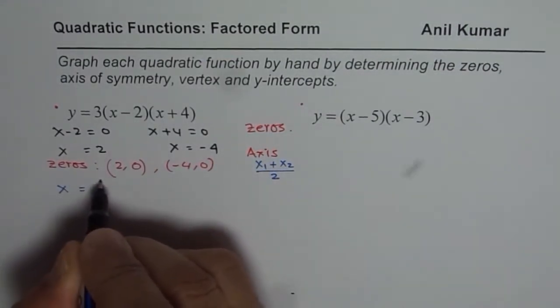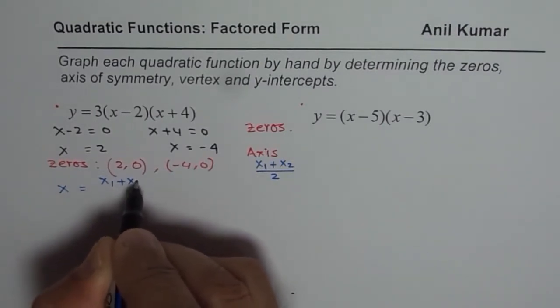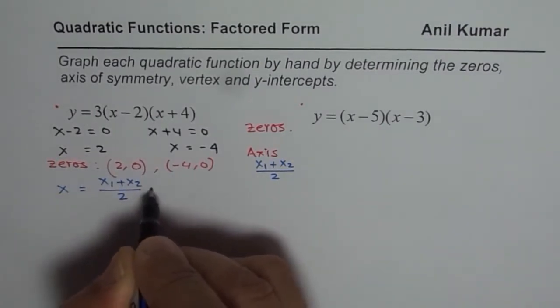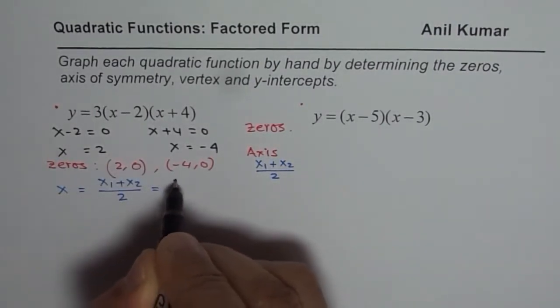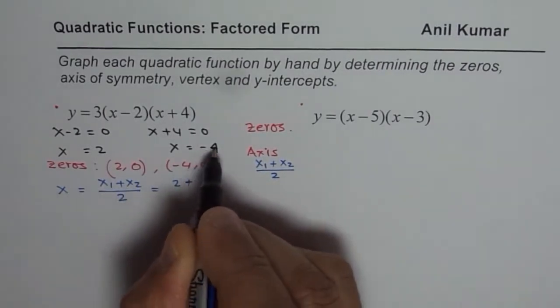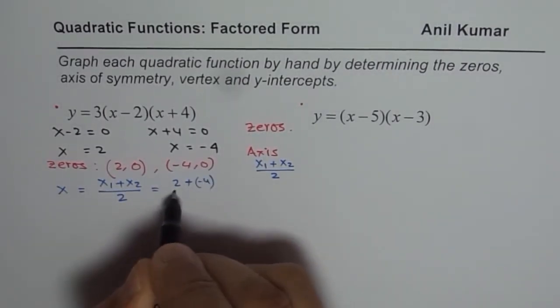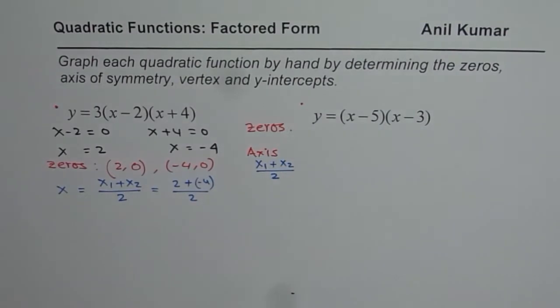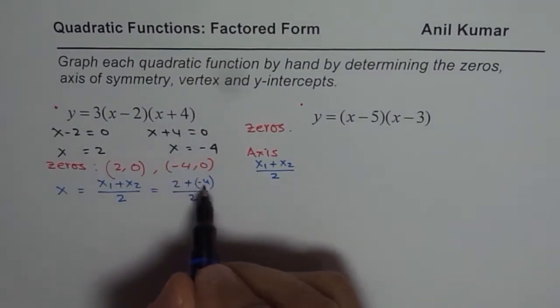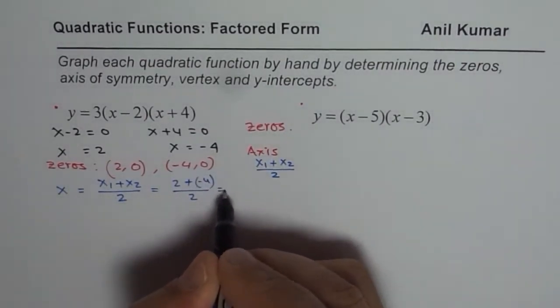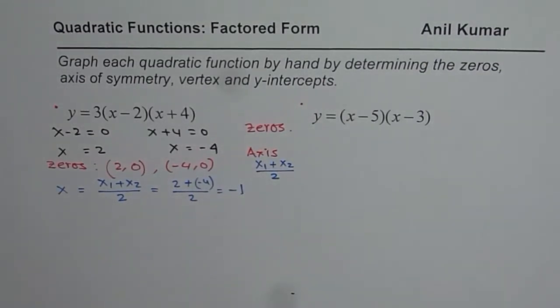It is at x equals (x₁ + x₂) / 2. x₁ is 2 and x₂ is minus 4. So we add and divide them by 2. We are finding the average value between the two zeros, which gives you the axis of symmetry. So 2 minus 4 is minus 2, divided by 2 is minus 1. So x equals minus 1 is the axis of symmetry.